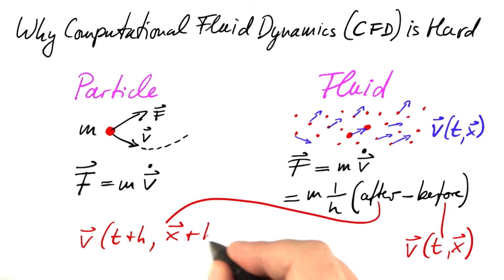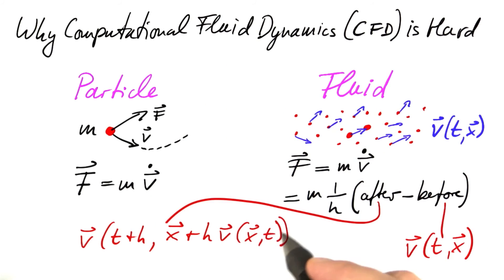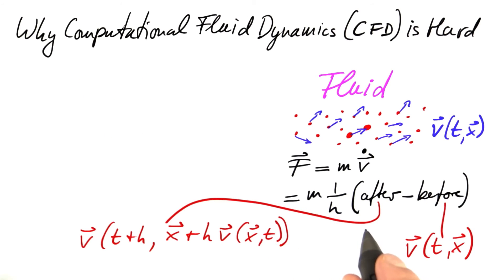We advanced by time step times velocity. Now this is going to make things ugly. The velocity field of something that includes the velocity field, a function applied to itself. So this is what makes things ugly and eventually leads to computational fluid dynamics being hard.